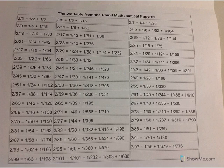This is a chart from something called the Rhind Papyrus—the two-over-n table from the Rhind Papyrus. What it is, is a way of writing fractions that have two in the numerator as a sum of distinct unit fractions.